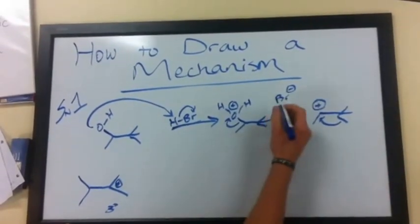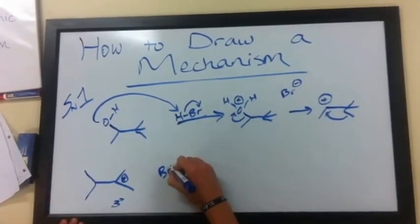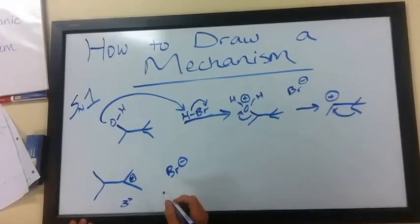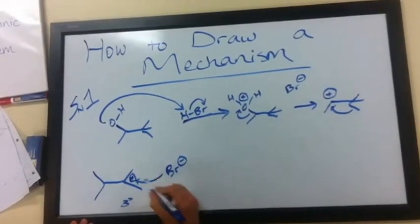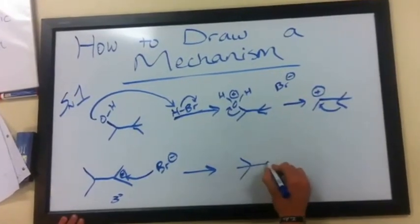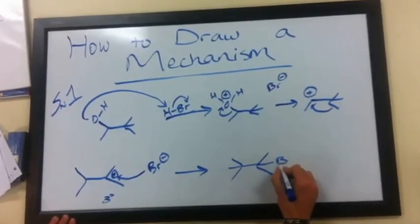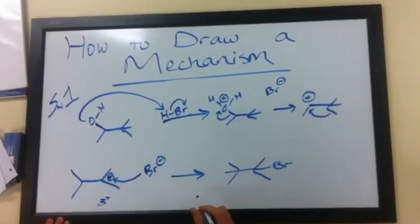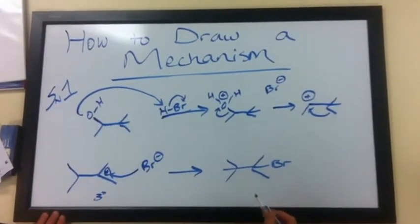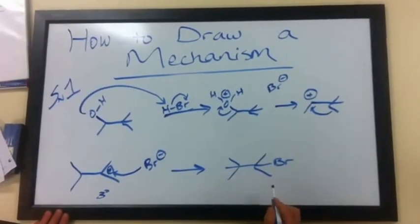Finally, we have this bromide ion that can act as a nucleophile, and the last step is a nucleophilic attack of this carbocation. A bond is formed. We have now replaced the hydroxide group with this bromine group, and that's an SN1 reaction.